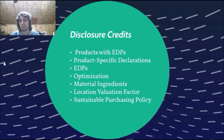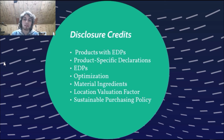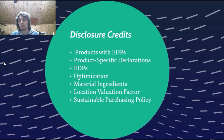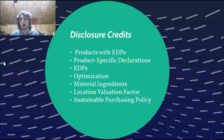Consider material ingredients — the inventory and disclosure of chemicals in products is important. Minimize the use and exposure of chemicals. One of the following must be used to inventory this: the Manufacturer's Inventory, Health Product Declarations, Cradle to Cradle Certified, or any USGBC program. Document material ingredient optimization use from sources such as Greenscreen V1.2 Benchmark, Cradle to Cradle Certification, or any third party for material ingredients. The Location Valuation Factor means materials are extracted, manufactured, and purchased within 100 miles of the building.